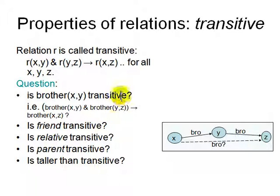And then a relation is called transitive if x is related to y and y is related to z, that means x is related to z. So, for example, x is a brother of y, y is a brother of z, does it mean x is a brother of z? So the question is, is brother transitive? Is friend transitive? If you have a friend and that guy is a friend of someone else, are you also that person's friend?